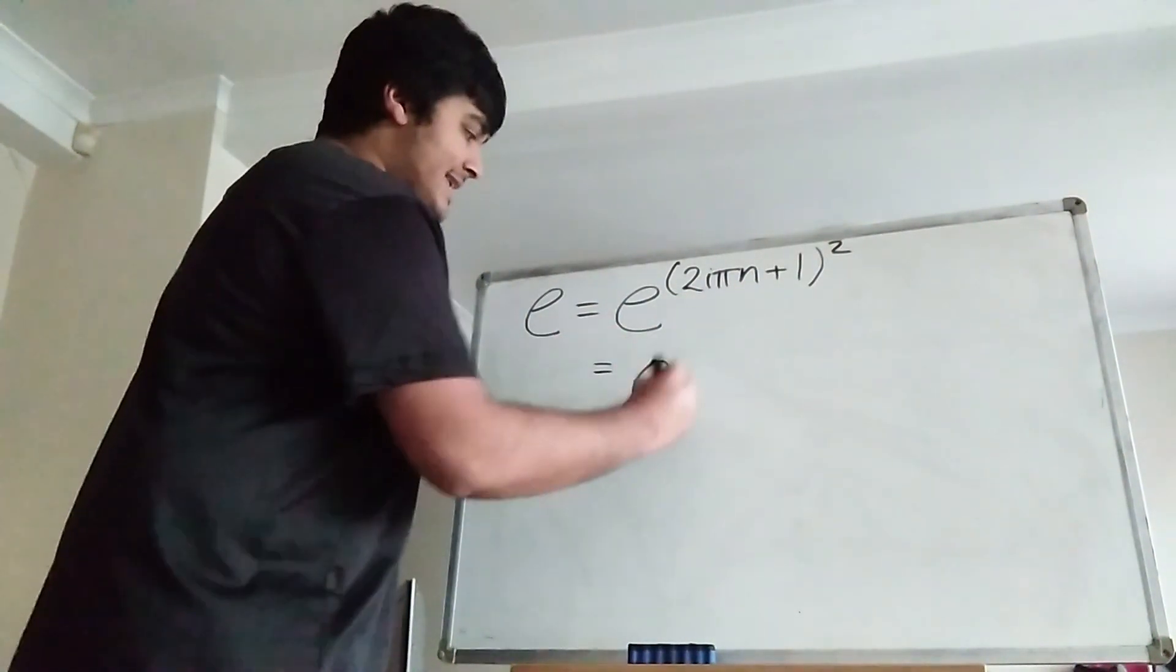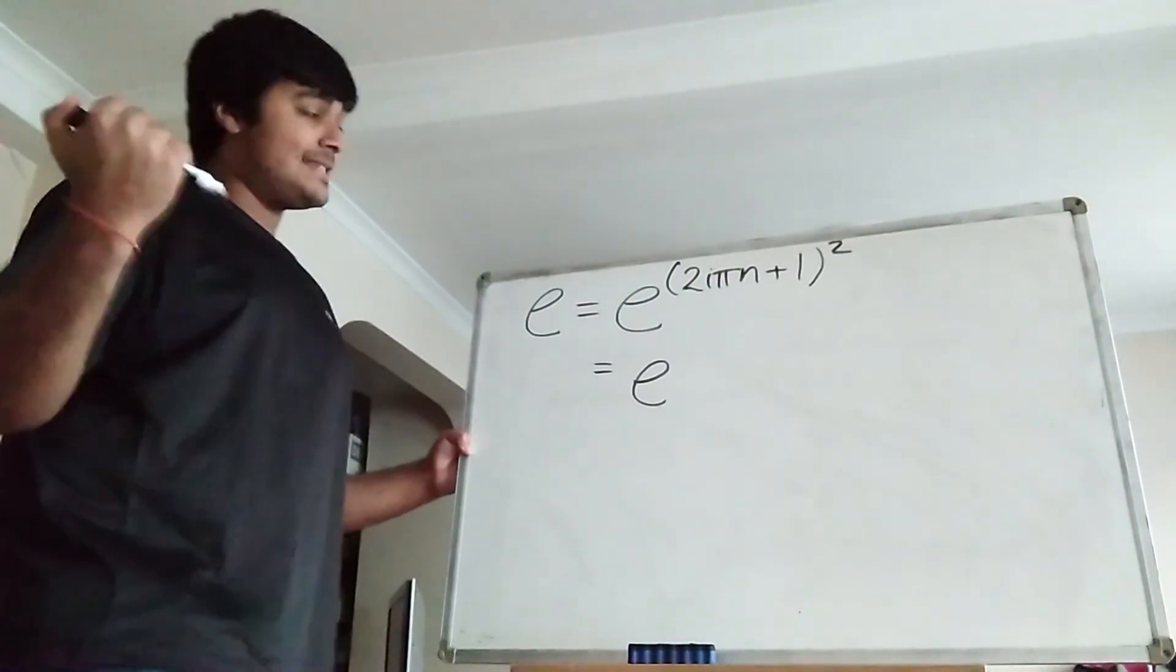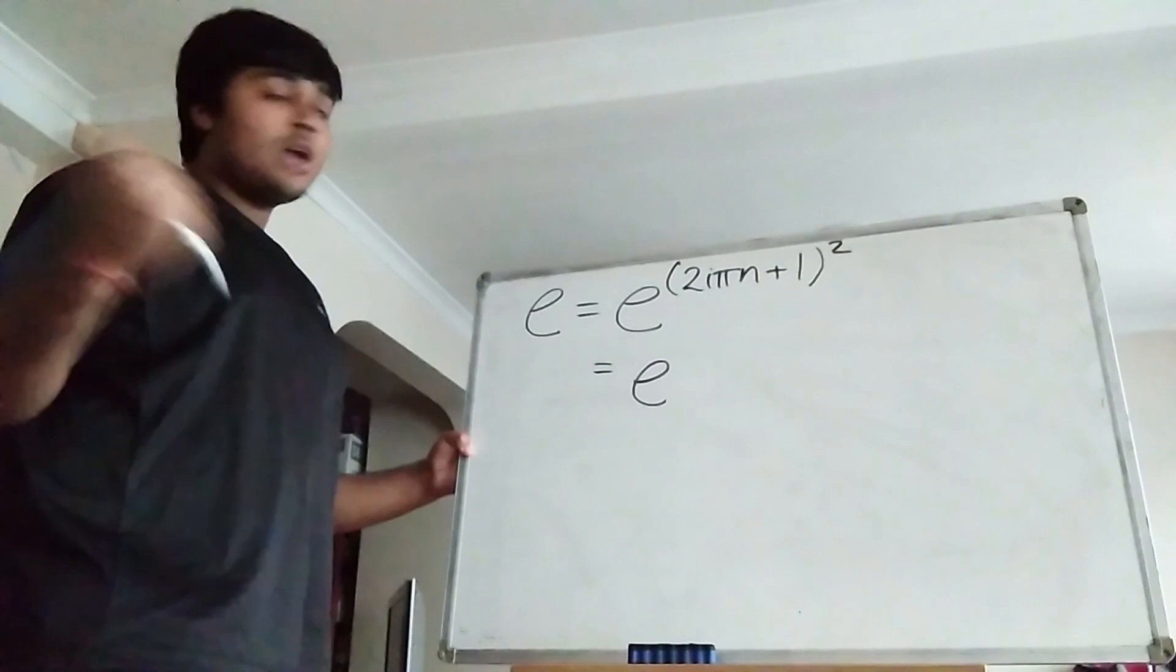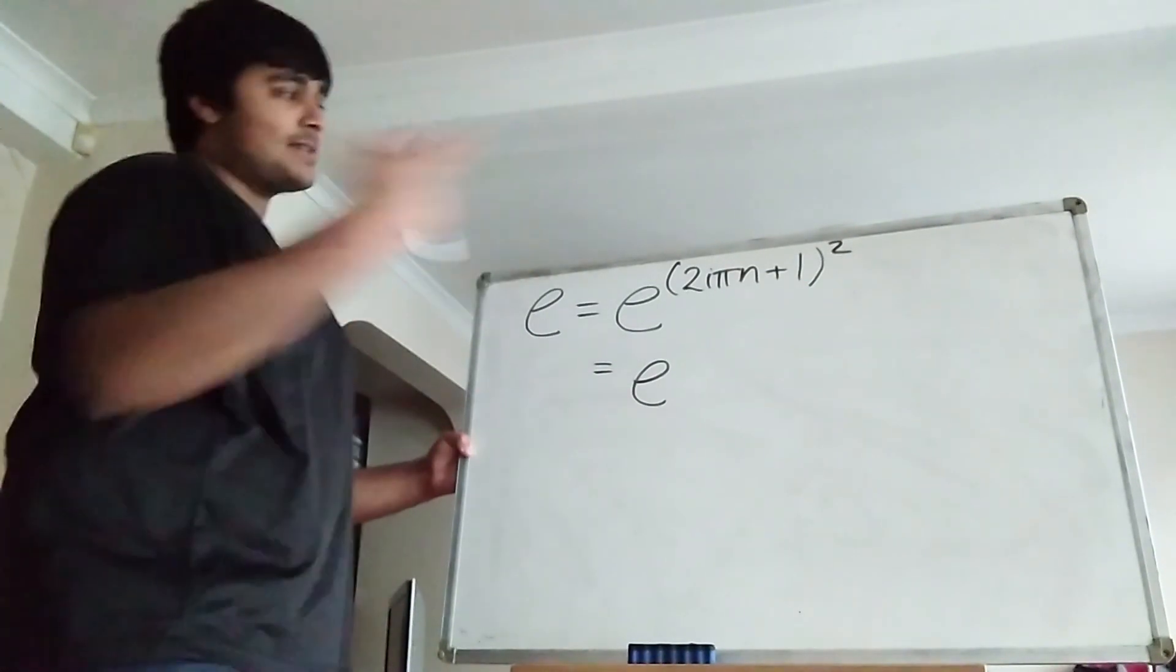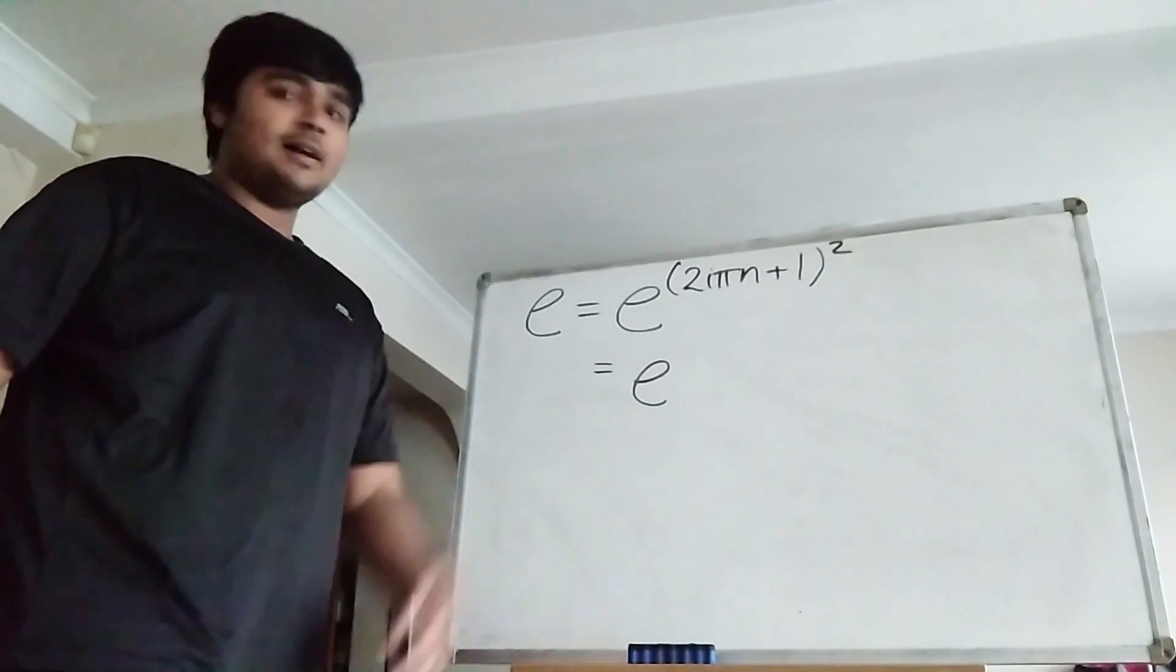Okay, so we have e equals e to the 2i pi n plus 1 all squared. Let's expand the brackets on this thing here. This equals e, so this guy here squared, which is going to give me 2 squared times i squared times pi squared times n squared. 2 squared is 4, i squared is minus 1, pi squared is pi squared, and n squared is n squared. So that thing is going to give me minus 4 pi squared n squared.